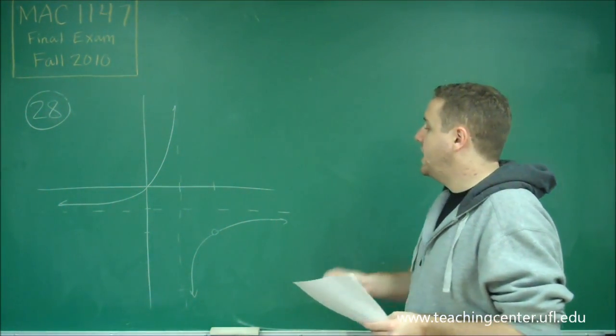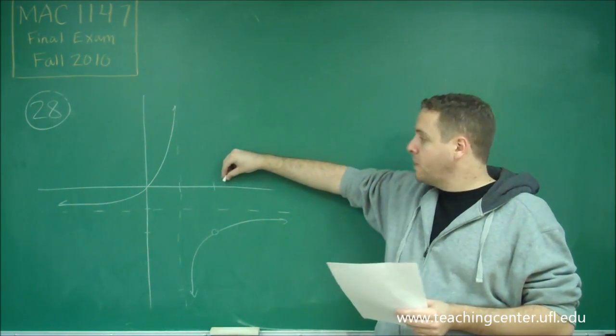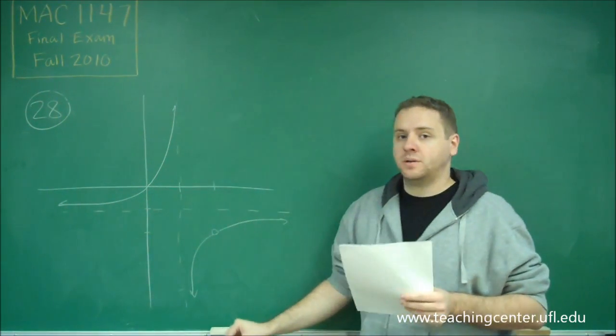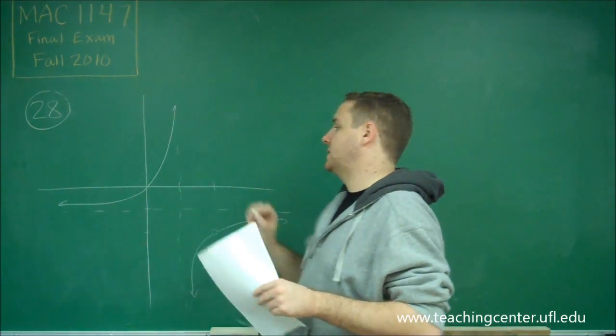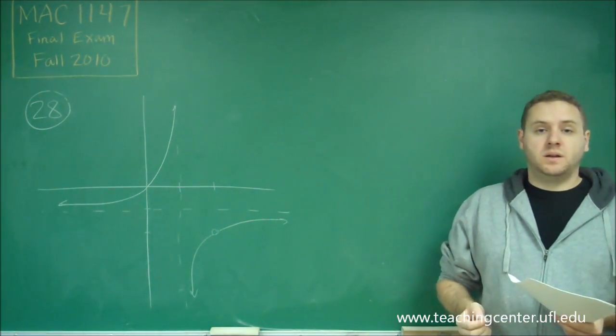First of all, we have a hole at x equals 2. We have a vertical asymptote at x equals 1. And we have a zero at x equals 0. So we have a lot of things that we already know should be in our graph.